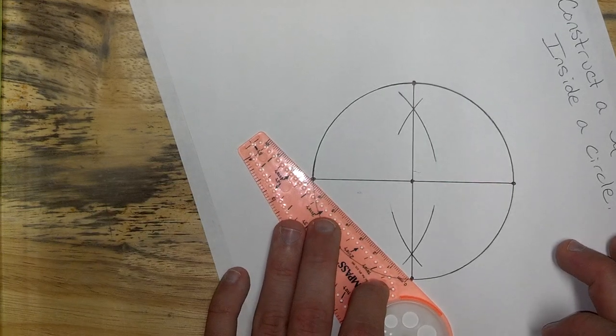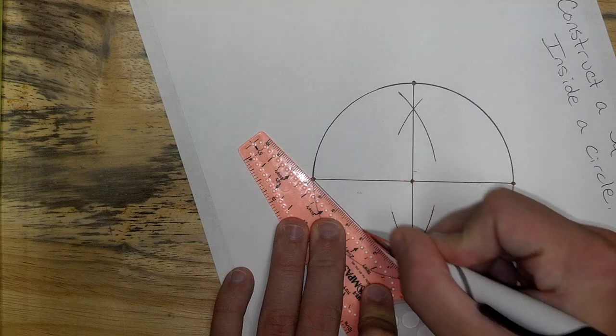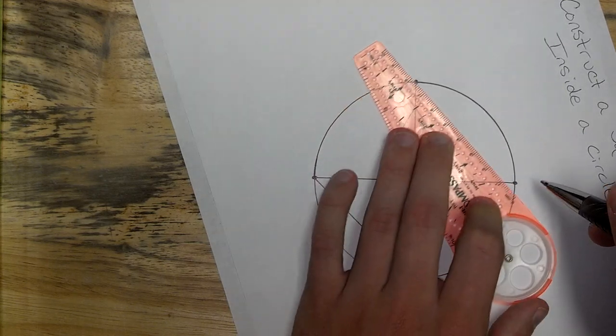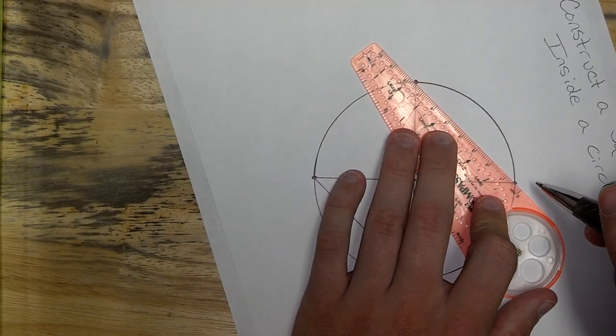Which means, if I connect the four of them, I'm going to end up with a nice square that goes inside the circle.